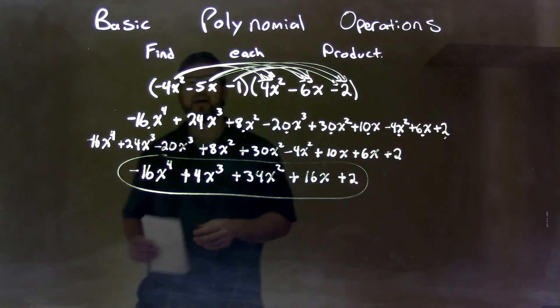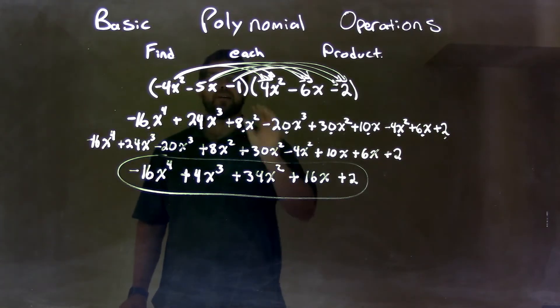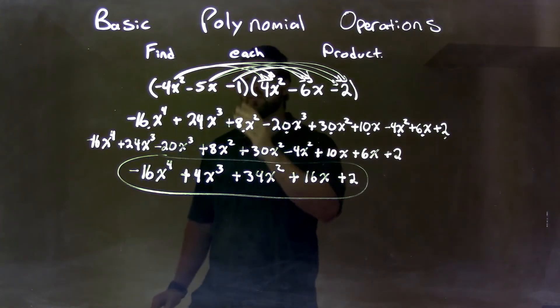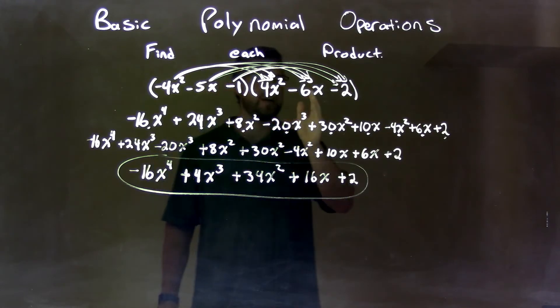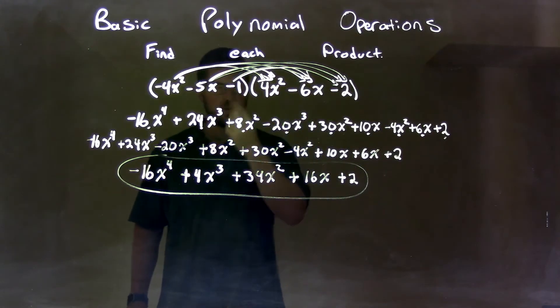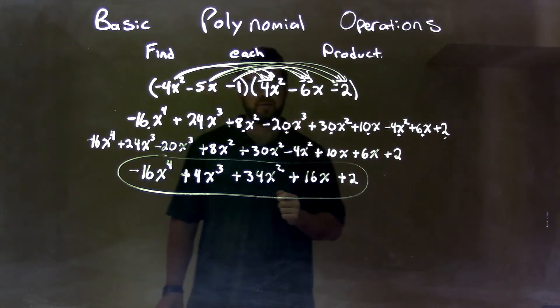So quick recap. What we did is we were given negative 4x squared minus 5x minus 1 times 4x squared minus 6x minus 2. We multiplied all parts of my first parenthesis by all parts of my second parenthesis.